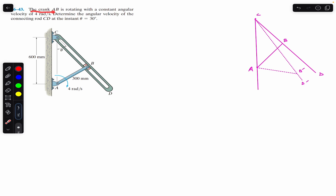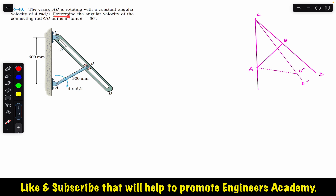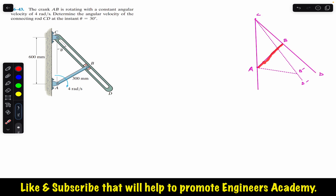The problem says that the crank AB is rotating with a constant angular velocity of 4 radian per second. Determine the angular velocity of the connecting rod CD at the instant when theta equals 30 degrees. So this crank AB is rotating with a constant angular velocity of 4 radian per second in the clockwise direction. This is the free body diagram — this represents the CD arm and this represents the crank AB.